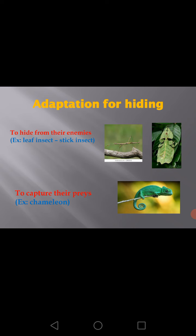They do this to hide from other animals — examples include the leaf insect and stick insect. Other animals like the chameleon simulate the dominant environmental conditions to catch their prey. At the end of this lesson, I hope you study well and good luck, dear students.